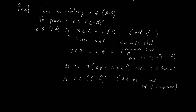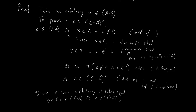But that is exactly what we wanted to prove. So there we go. Since x was an arbitrary element, it holds for all elements in the set, and therefore A minus B must be a subset of the complement of C minus A.